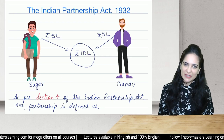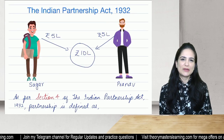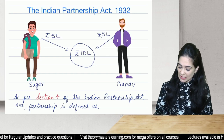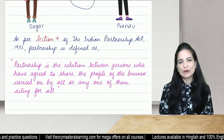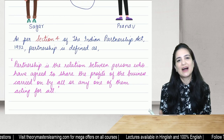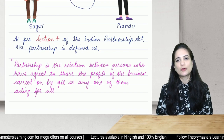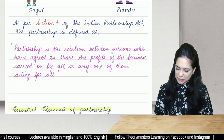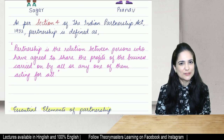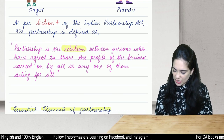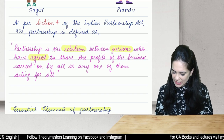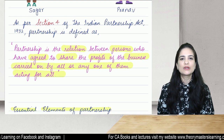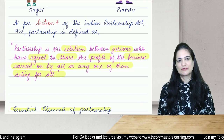What are the things they need to keep in mind while starting a partnership business? The definition will reveal the characteristics. Section 4 of the Indian Partnership Act 1932 defines partnership as: it is a relation between persons who have agreed to share the profits of the business carried on by all or any one of them acting for all. These are the essential elements and characteristics of a partnership business.